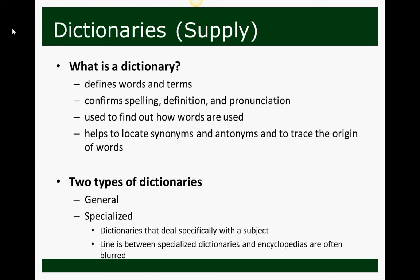We also use dictionaries to find out how words are used — is it a noun, a verb, an adjective? What part of speech does it function as in our language? We also use dictionaries to help locate synonyms and antonyms — words that are similar or words that are complete opposites — and also to trace the origin of words.